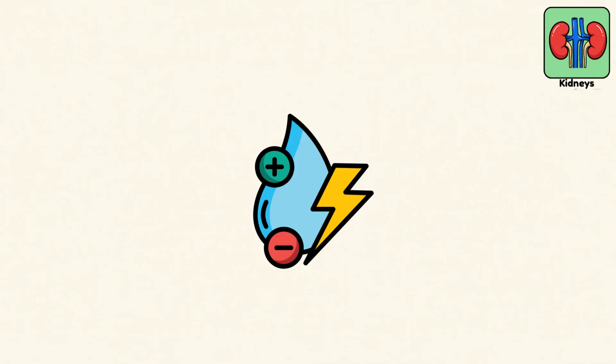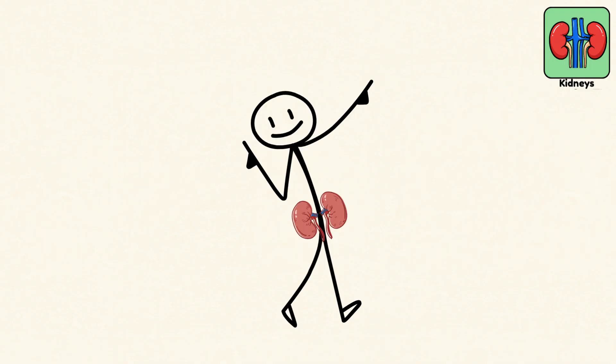They also regulate electrolyte levels, blood pressure, and even help in producing red blood cells. And the backup plan? You only need one to live a perfectly normal life.